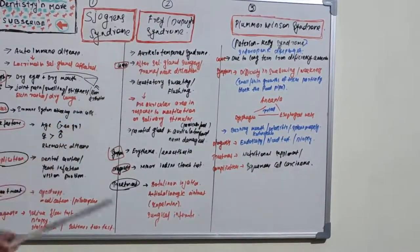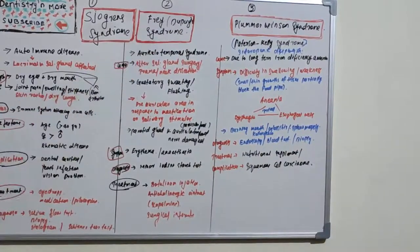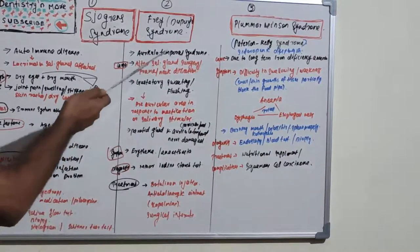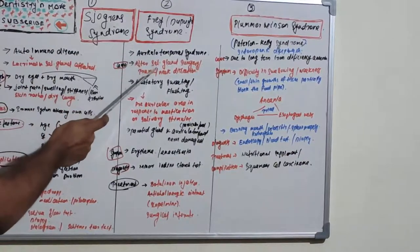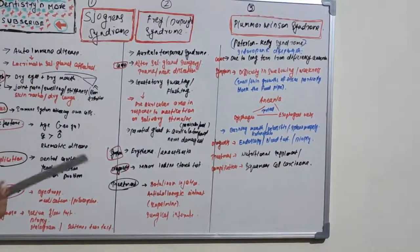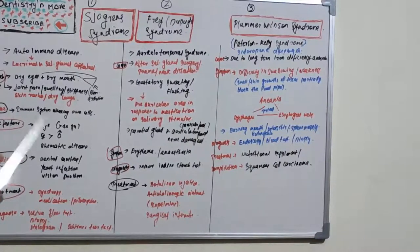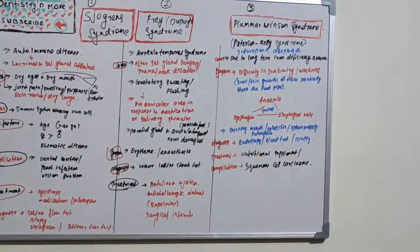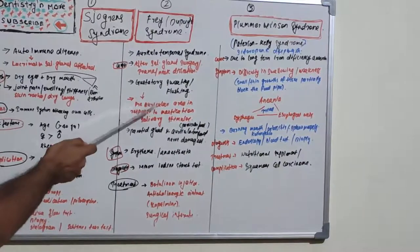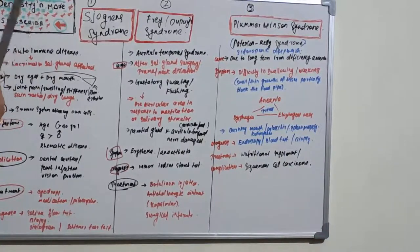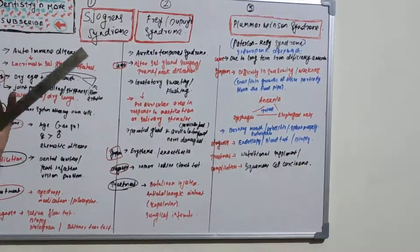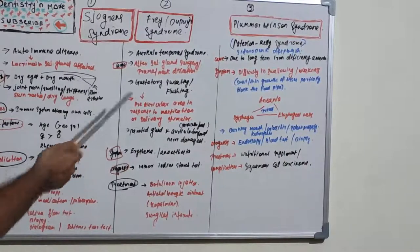Frey's syndrome is also known as auriculotemporal syndrome or Dupuy's syndrome. Here, the salivary gland is affected, but it is not an autoimmune disease — unlike Sjögren's syndrome, it occurs due to surgery, trauma, or neck dissection. The parotid gland and auriculotemporal nerve are damaged, resulting in flushing and gustatory sweating in the pre-auricular area in response to mastication or salivary stimulus.